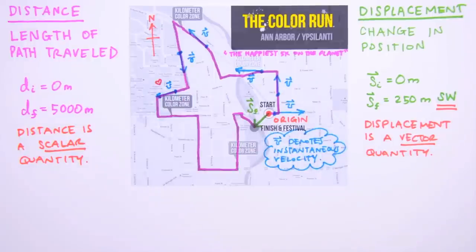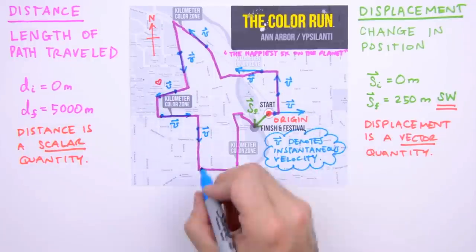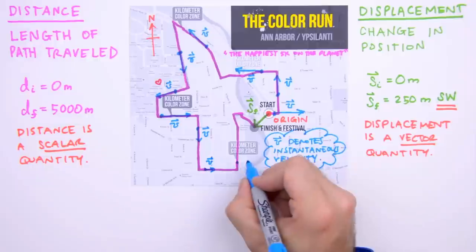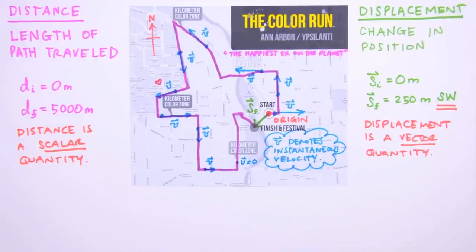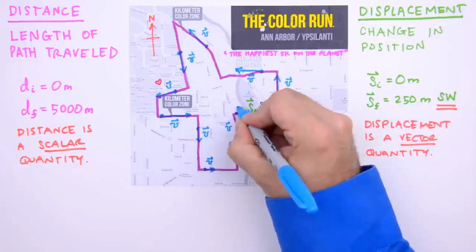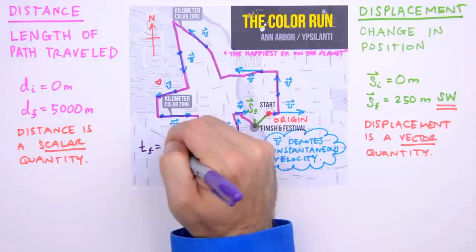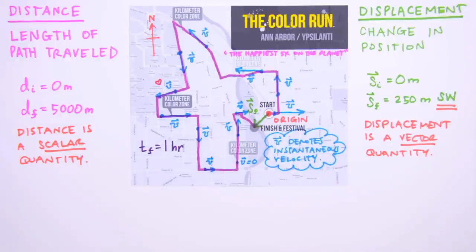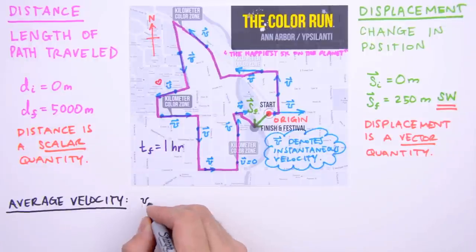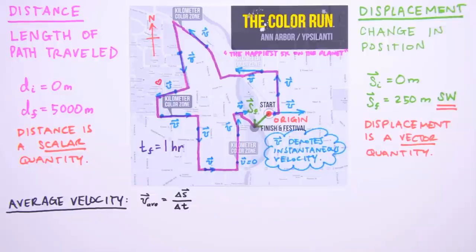Of course there's an infinite number of velocity vectors we could indicate — we're just drawing a few. Maybe our runner is getting tired after the first couple clicks, is beginning to slow — shorter vector arrows — maybe even comes to a halt at the fourth kilometer color zone to rest, replenish some electrolytes, clean the cornstarch out of their ears, and the runner goes on to complete the race with a finishing time of, let's say, one hour. Now we can determine average velocity. The average velocity of a body is defined as the change in the body's displacement, delta s, divided by the change in time, delta t.